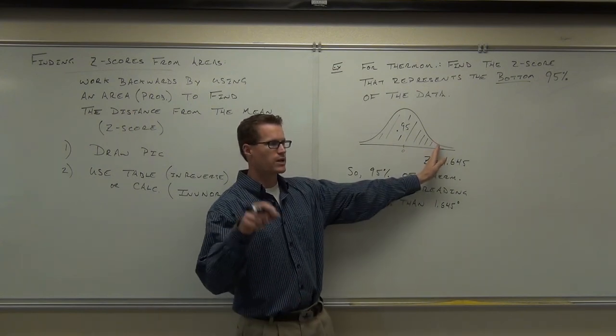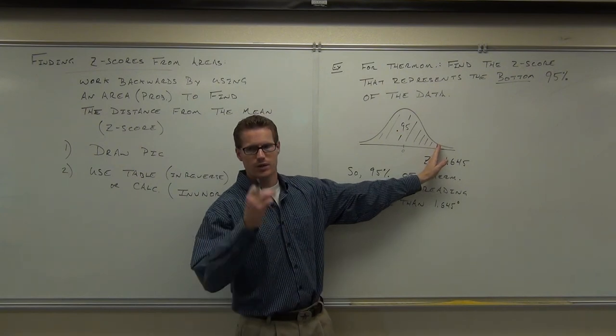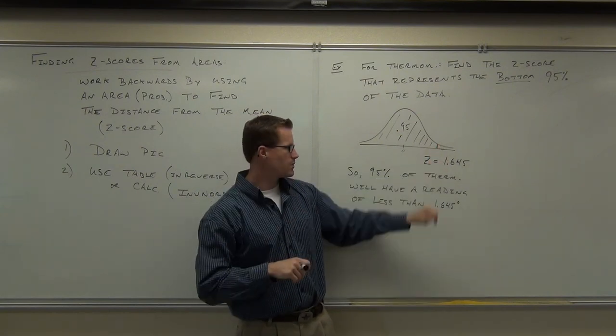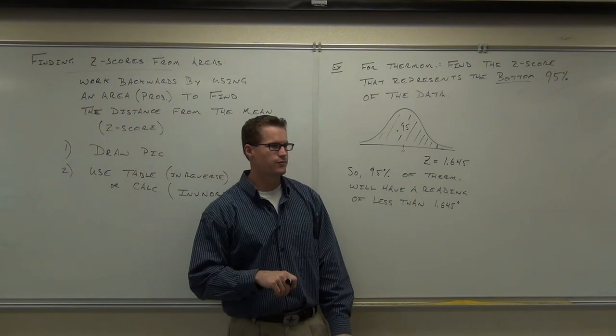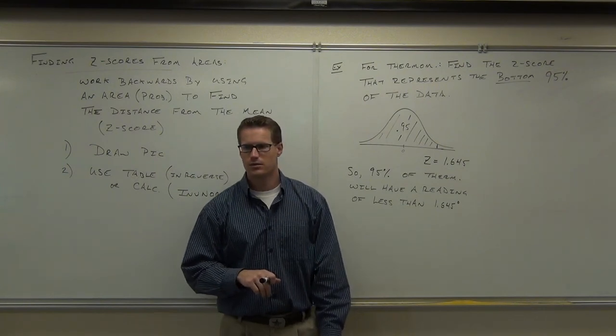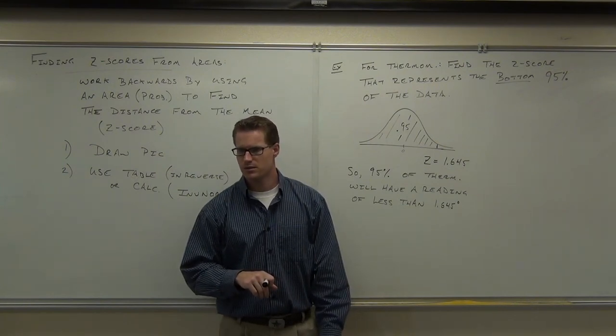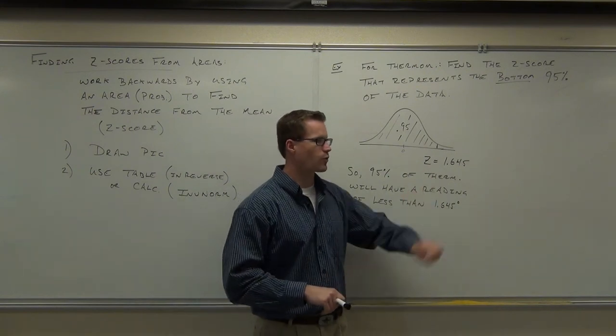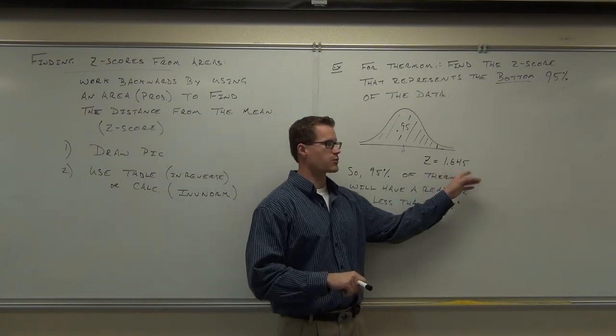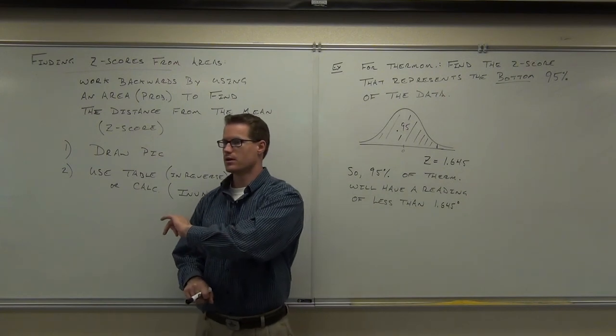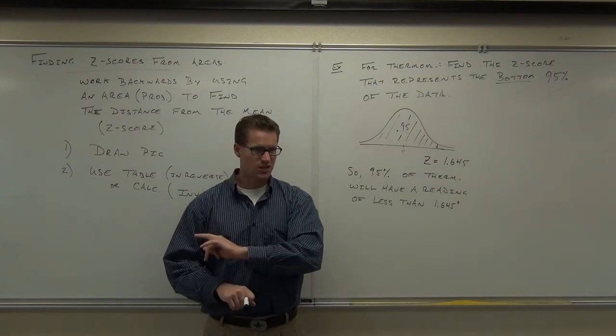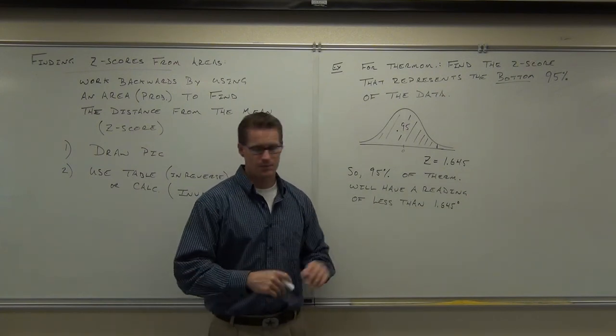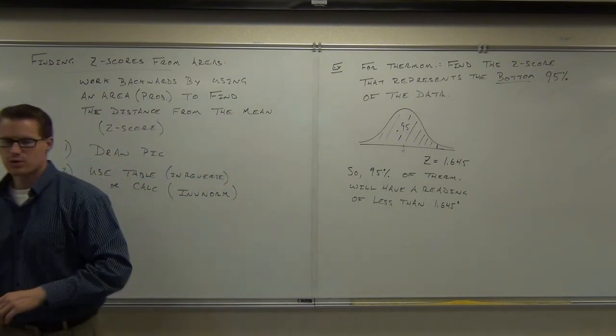So here I have to plug in 0.95. Try that on your calculator. Plug in 0.95. Press enter. You should get 1.6446 or something like that. 1.648. And that rounds to the 1.645, which is how they got it on their table. See how you can use your calculator? Or the table, either one. It's fine.